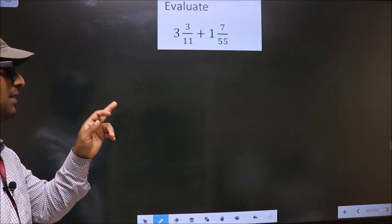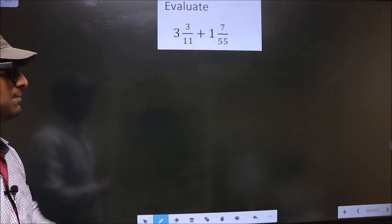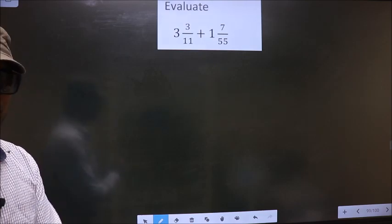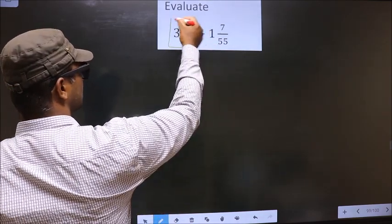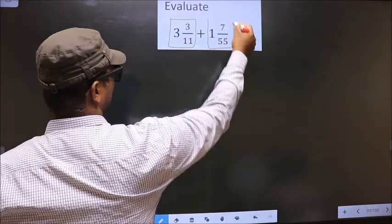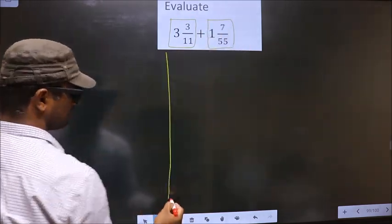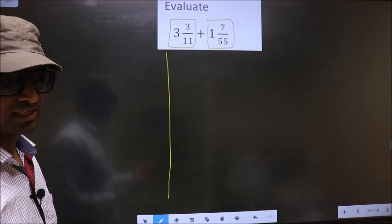Evaluate 3 3/11 plus 1 7/55. First, we should convert these mixed fractions into improper fractions. Let us convert.